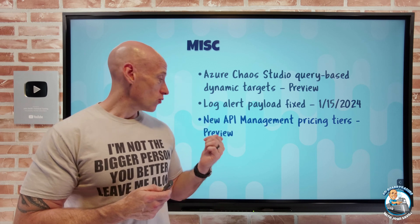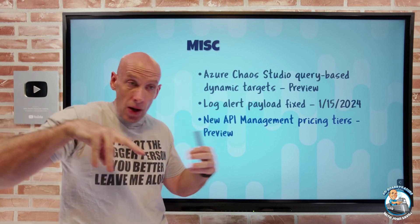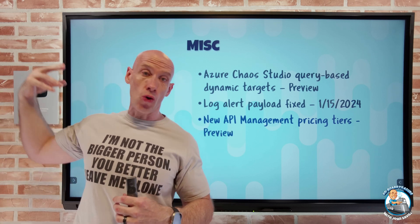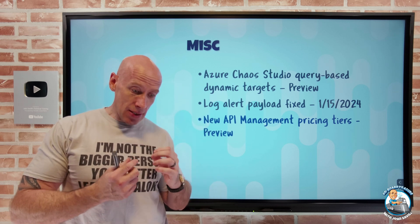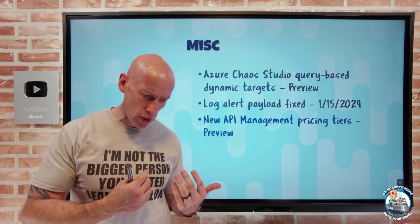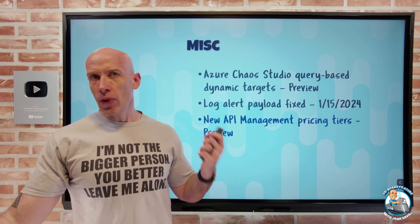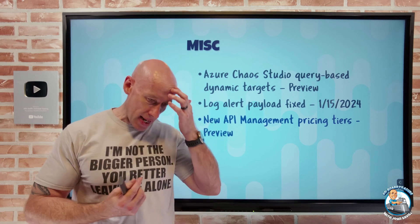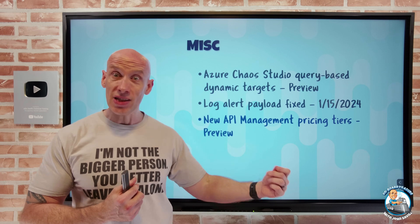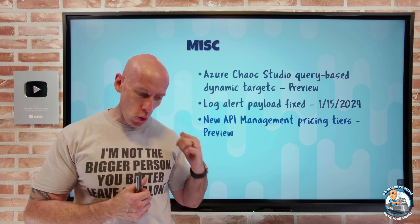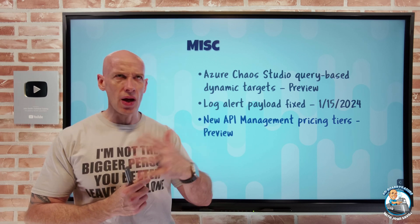Finally, there are new preview pricing tiers for API Management — Basic V2 and Standard V2. API Management provides a single secured entry point for all your APIs across Azure, other clouds, or on-premises. These new tiers feature faster deployment, spinning up in minutes with rapid scaling, and support private endpoints. Standard V2 also supports VNet integration, which was previously only available in premium SKUs. Both support up to 10 scale units, representing a 5X and 2.5X improvement respectively.